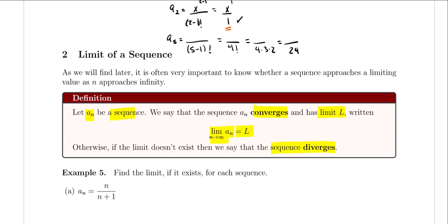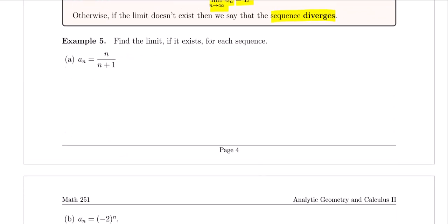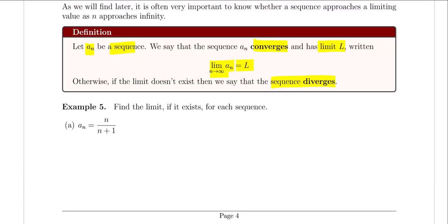Let's take a look at a couple of sequences and determine whether those sequences will converge or diverge. The key idea here is: as n approaches infinity, do you actually reach a value? Beginning with the first example, we want to see if we can find the limit for the sequence given by a_n equals n over n plus 1.